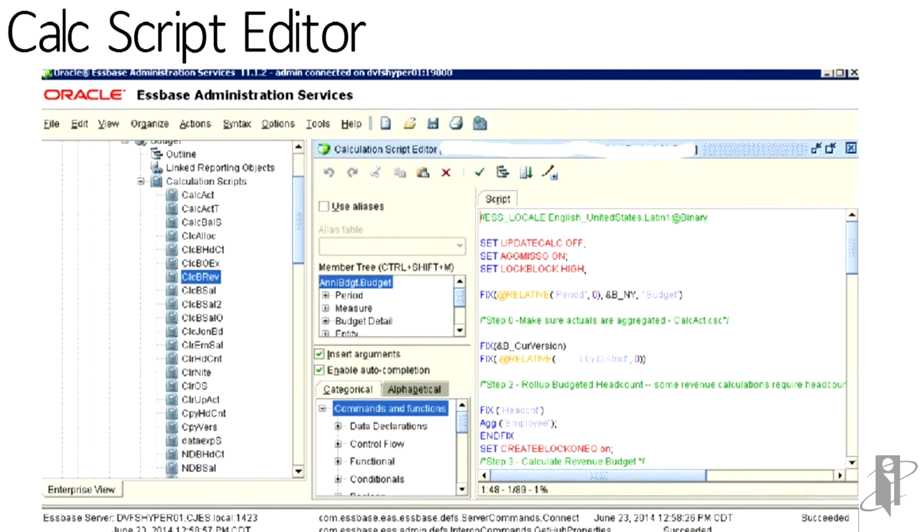That's that small section that's color-coded. Off to the left, we have things like our outline, our functions we want to insert, and then off to the far left is our navigation section that we normally see in EAS.